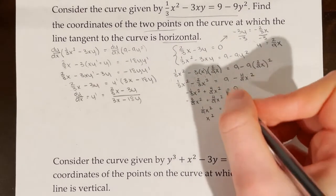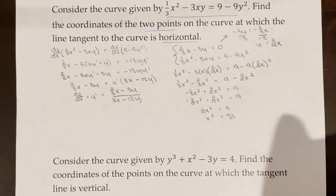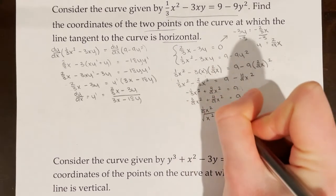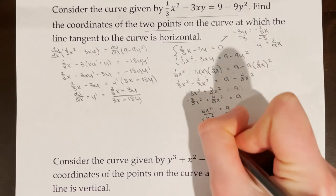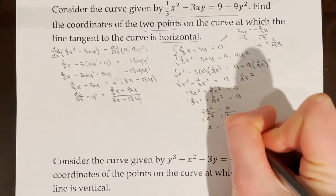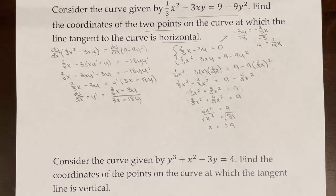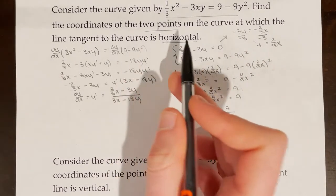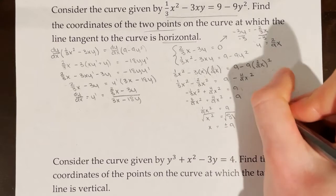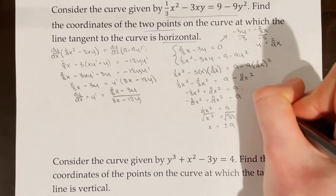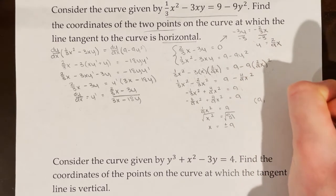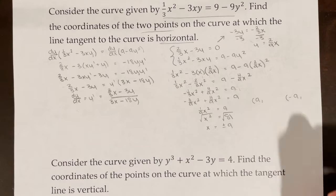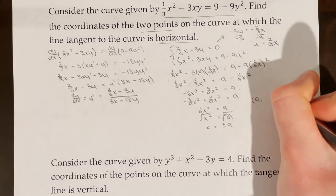A common mistake would be to say x equals 9 only. In reality, taking the square root of both sides means x can equal positive or negative 9. So we're likely going to have two points — one at x = 9 and another at x = -9. We need to find the corresponding y-coordinates.